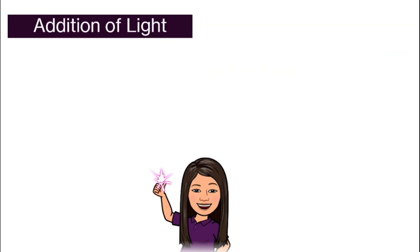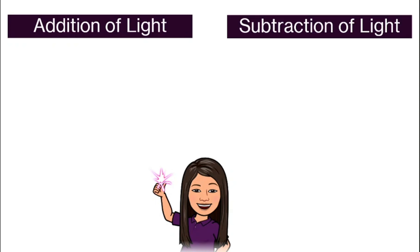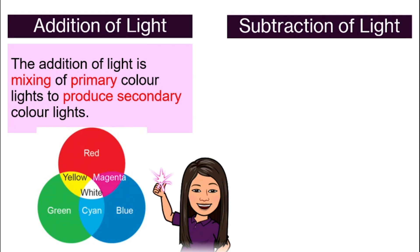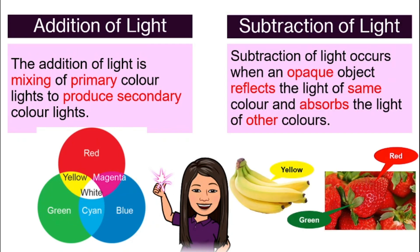So back to our main big idea — the addition of light and the subtraction of light. Can you still remember their concepts? For addition of light, it is simply how we make secondary color lights — the mixing of primary colors to produce secondary color lights. The subtraction of light, however, is how we see colors — when the opaque object only reflects lights of the same color as it and absorbs the lights of other colors. Here is a summary you can compare and contrast easily.